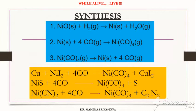In the second method of synthesis, tetracarbonyl nickel can be made by heating nickel iodide with carbon monoxide in the presence of copper, which acts as a halogen acceptor and gets released as copper iodide, forming nickel carbonyl.